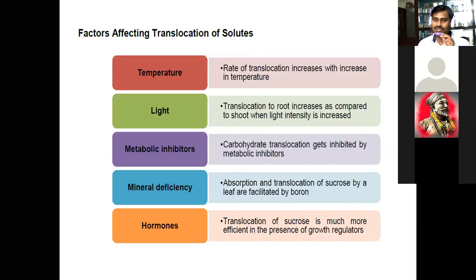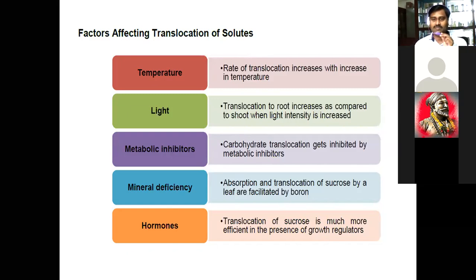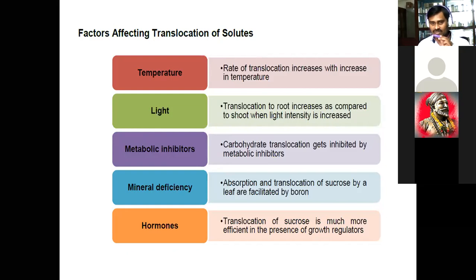Phloem moves food material mostly in the downward direction, but it also moves food laterally and in the upward direction as well. However, xylem has a fixed direction — that is, upward. Another factor is the hormone.